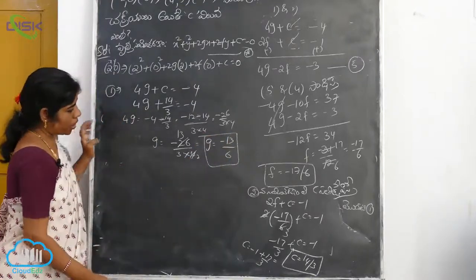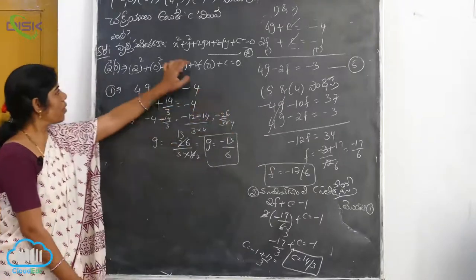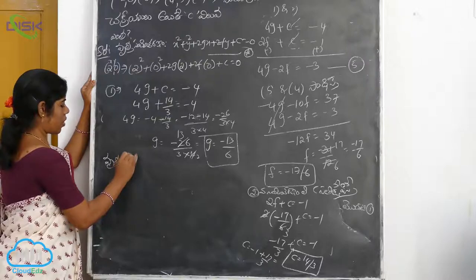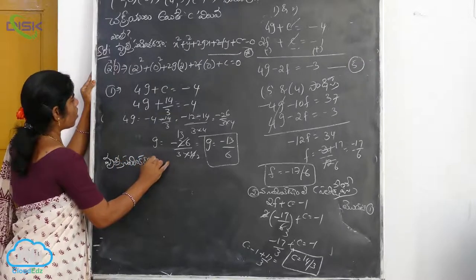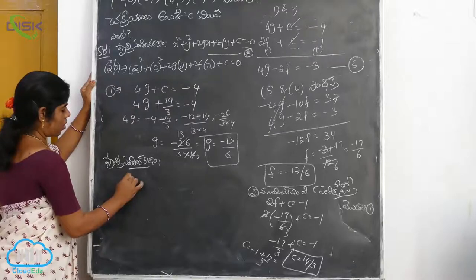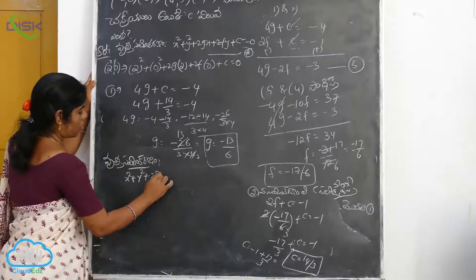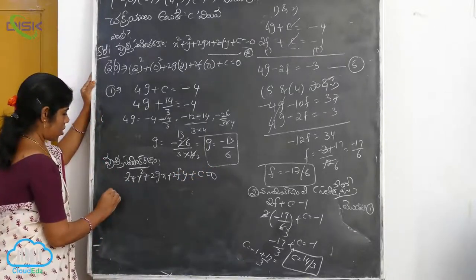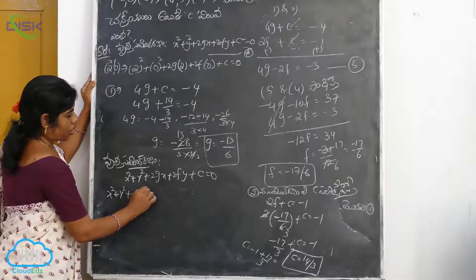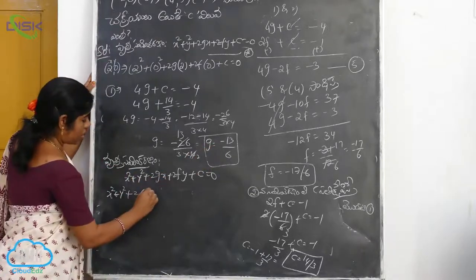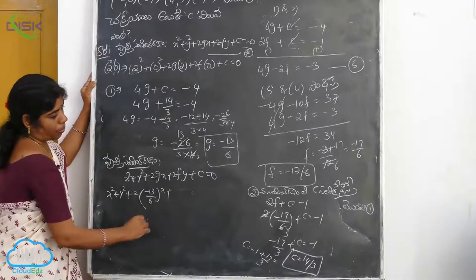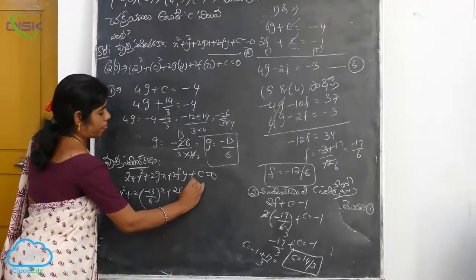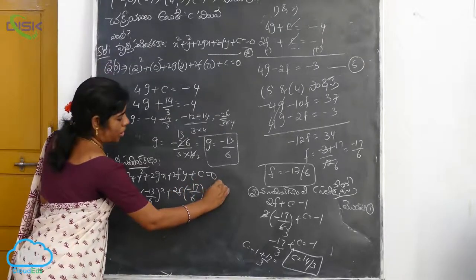Let's substitute into the circle equation: x² plus y² plus 2gx plus 2fy plus c is equal to 0. Here g is minus 13 by 6, f will be minus 17 by 6, and c will be 14 by 3.